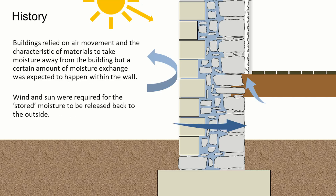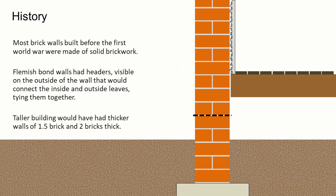Part of the system was that buildings relied on air movement and the characteristics of the materials they were made of to take moisture away from the building. It relied on the wind and the sun to remove the stored moisture and release it back to the outside. As we became more reliant on brick as a material,